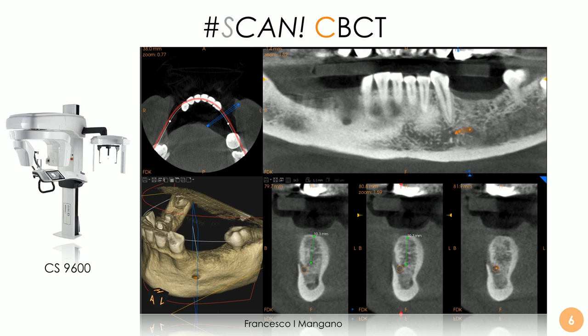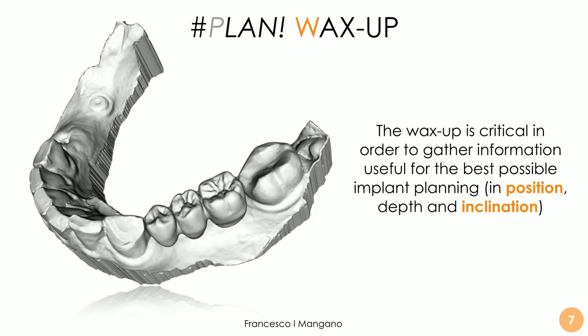We then proceed with the cone-beam CT — in this case using the CS 9600 with a 10×5 field of view, which gives us all the necessary information. A 5×5 FOV can be chosen for a single implant, but 10×5 allows better superimposition with the intraoral scanner data. Inside the CBCT visualization software by Carestream Dental we can pre-evaluate the site: in this case we have sufficient bone volume, thickness, and height to place the implants, so we proceed with the wax-up.